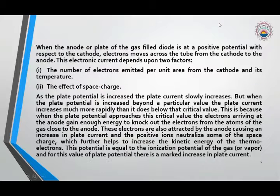The plate in this diagram is anode. When the anode or plate of the gas filled diode is at a positive potential with respect to cathode, electrons move across the tube from the cathode to anode. This electronic current depends upon two factors.